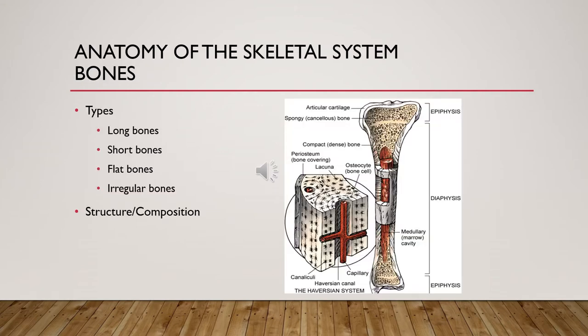Chapter 49 discusses the anatomy of the skeletal system with bones, describing four different types. Long bones are cylindrical with round ends and can bear weight, such as the femur. Short bones are much smaller and bear little to no weight — examples are phalanges. Flat bones protect our vital organs such as the heart and lungs — the scapula, sternum, and rib bones are included. Irregular bones are uniquely shaped, like our wrist bone.